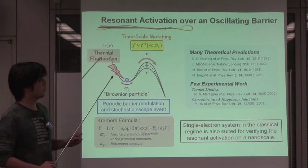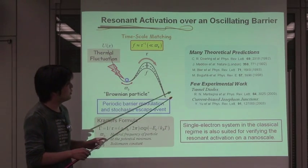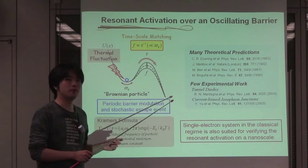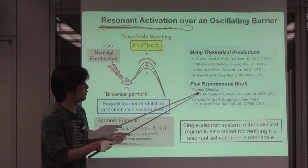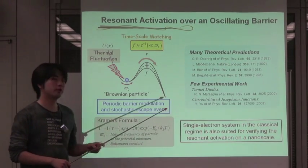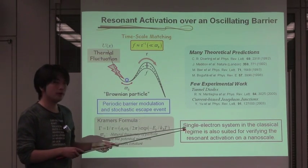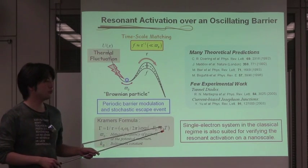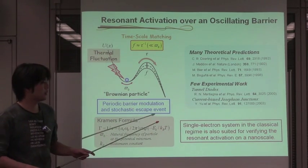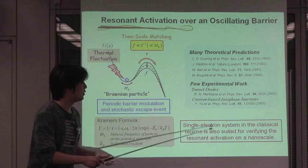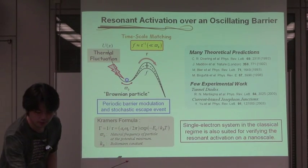Such resonant activation has been observed only in the macroscopic system of the tunnel diode and the current bias Josephson junction. As you may expect, the single-electron system in the classical regime is also suited for verifying the resonant activation of a Brownian particle on a nanoscale.